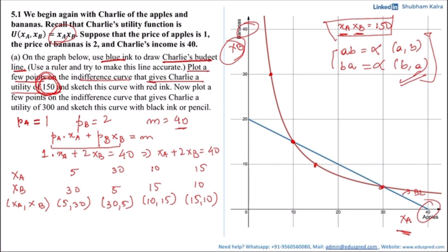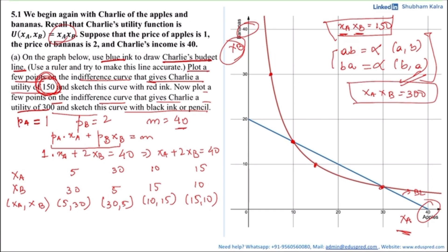Now plot a few points on the indifference curve that gives Charlie the utility of 300 and sketch this curve with black ink or pencil. We repeat the same process; the only difference is that instead of 150, we now achieve the utility of 300. That means xa multiplied by xb equals 300. Let's draw a table for xa and xb.